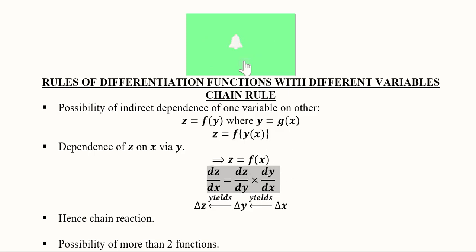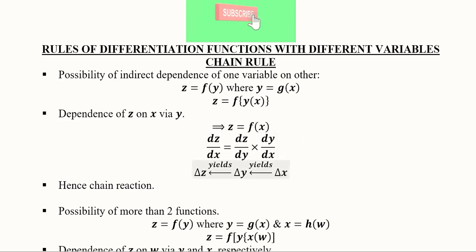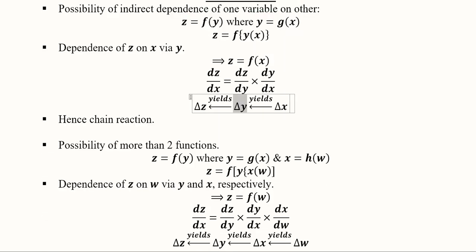The chain rule is developed here: x affects y and y affects z. The indirect dependence via y is confirmed — a change in x yields a change in y, and a change in y yields a change in z. This is why we call it the chain rule, because it follows a chain reaction.